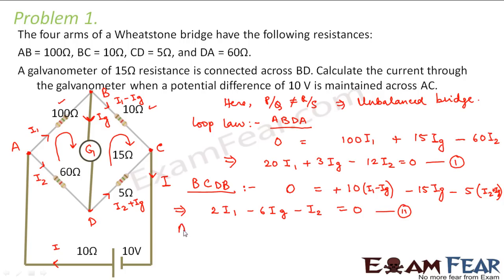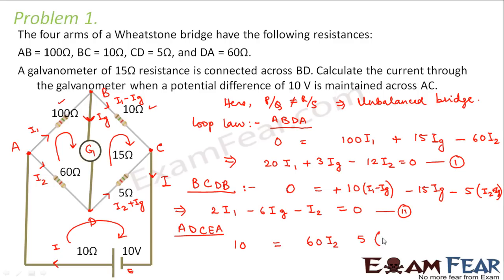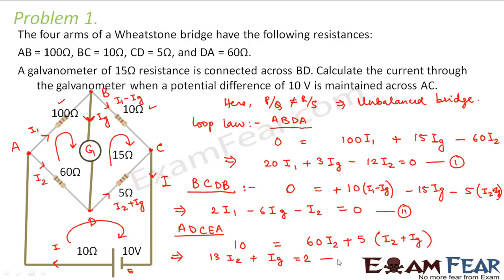Now applying loop law to loop ADCEA, assuming a direction: the net EMF is 10 volts. The resistances involved are 60 ohms and 5 ohms, with currents I2 and I2 + IG respectively. Both I2 and I2 + IG are along the assumed direction, so both have positive signs. This gives us the third equation: 13I2 + IG = 2.